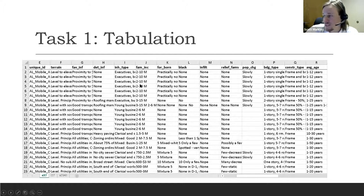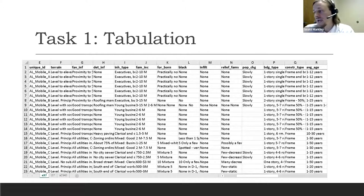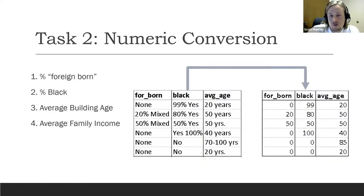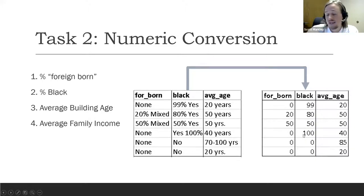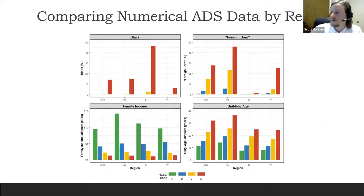However, even in that more readable format, you still have alphanumeric characters and symbols in the columns, so you can't do any systematic analysis yet — you can read through it more easily, but you can't make graphs, run regressions, or anything like that. The next step was to take the numerical variables — the foreign-born and Black population percentages, building age, and family incomes — and extract just the numbers into a clean format so you can actually do analysis.